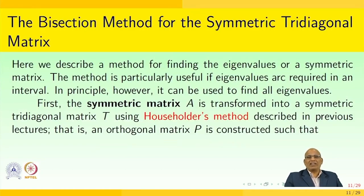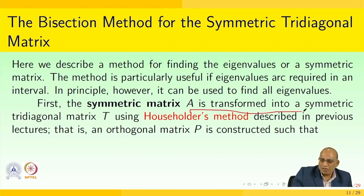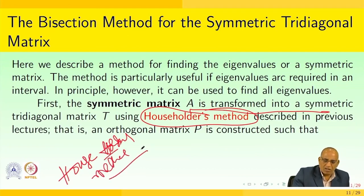We can now look into the bisection method for the symmetric tri-diagonal matrix. Here we describe a method for finding the eigenvalues of a symmetric matrix. The method is particularly useful if eigenvalues are required in an interval, though in principle it can be used to find all eigenvalues. First, the symmetric matrix A is transformed into a symmetric tri-diagonal matrix T by using the Householder method.